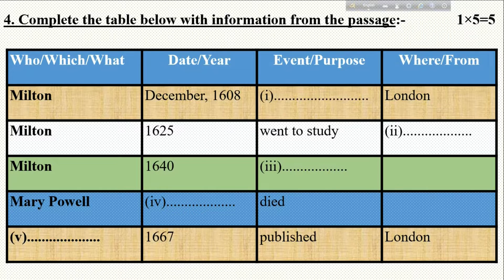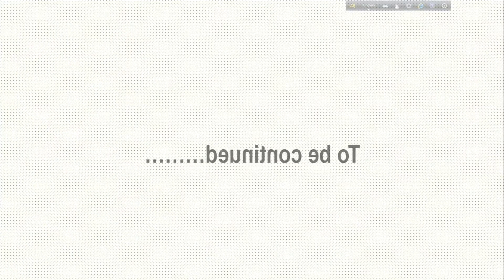Then the next column: 'Event or Purpose' — that means cause. And in the last column: 'Where or From' — that means place or source. For each number, try to find that sentence in the passage and sequentially find out the answer. I shall show you the answers in the next video clip. You just keep your eyes on the screen.